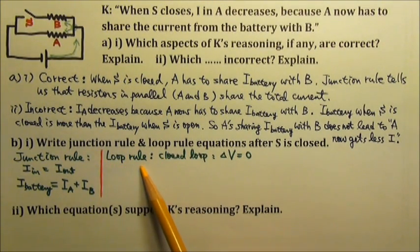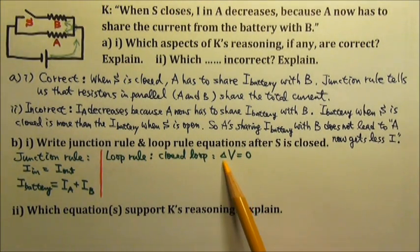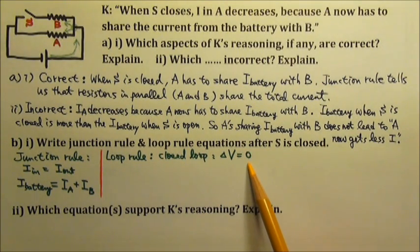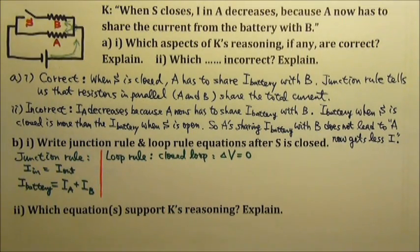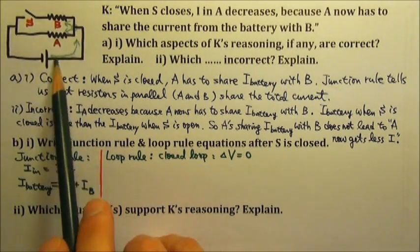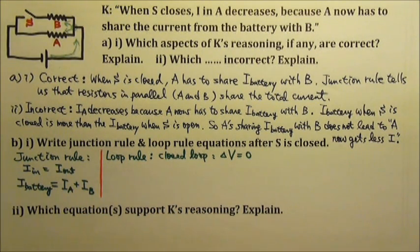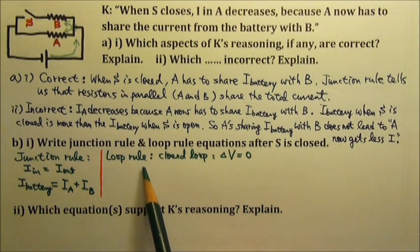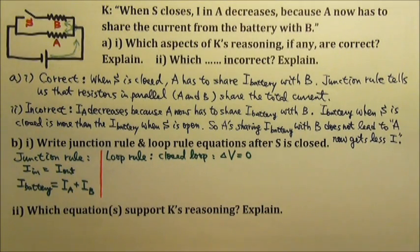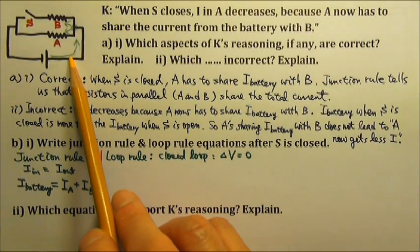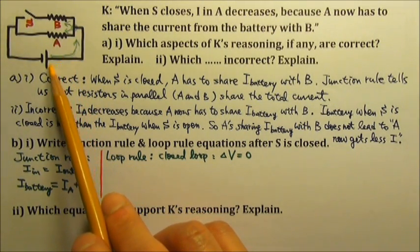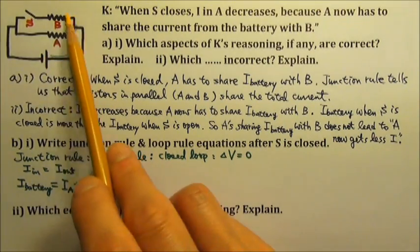The loop rule says that for any closed loop, the change in electric potential is zero. When the switch is closed, there are three loops in this circuit: the top loop, the bottom loop, and the big loop. We just have to write loop rule equations for two of them, because the third is redundant. I'm going to write one for the loop involving the battery and resistor A, and one for the loop involving the battery and resistor B — the big loop.